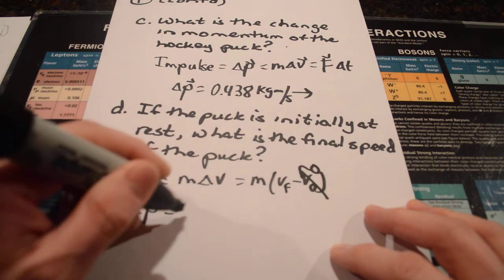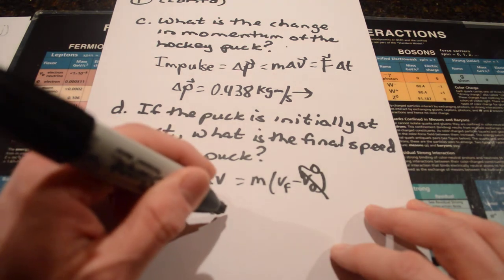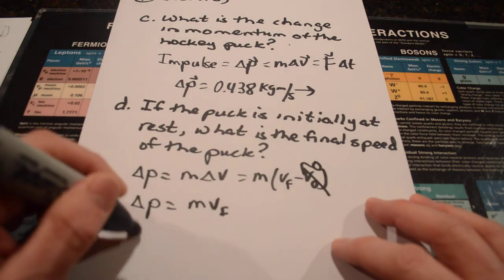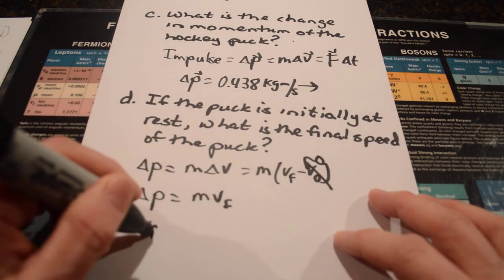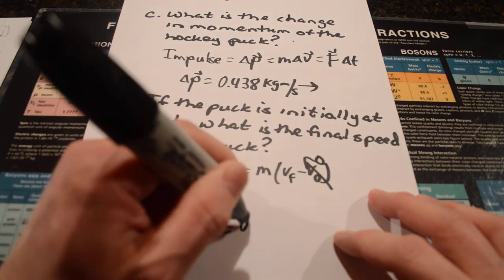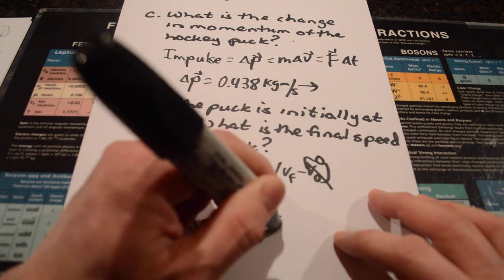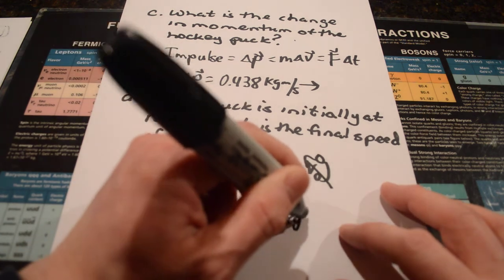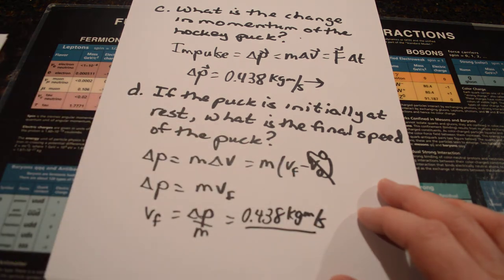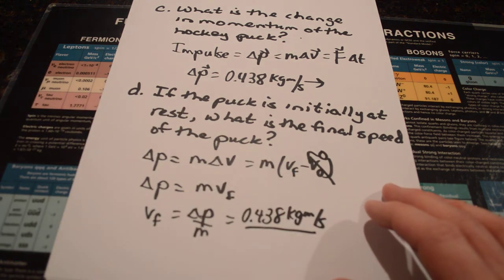So, our change in momentum is just equal to the mass times the final velocity. Your final velocity, is what we're looking for, is then just equal to the change in momentum over the mass. Change in momentum was your 0.438. And maybe now you're going to see why I said kilogram meters per second, because we can divide by the mass.